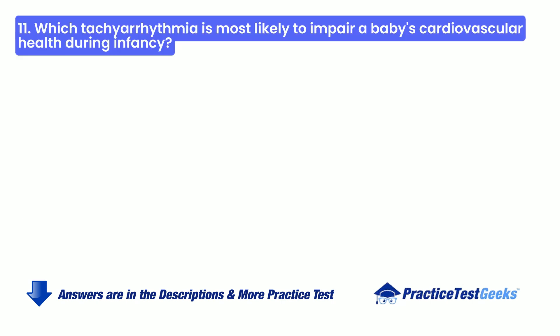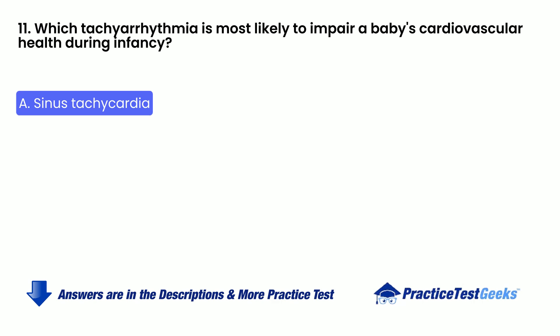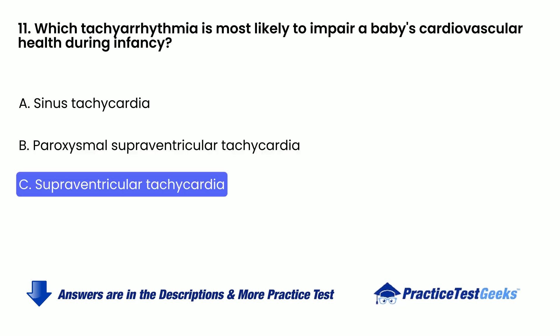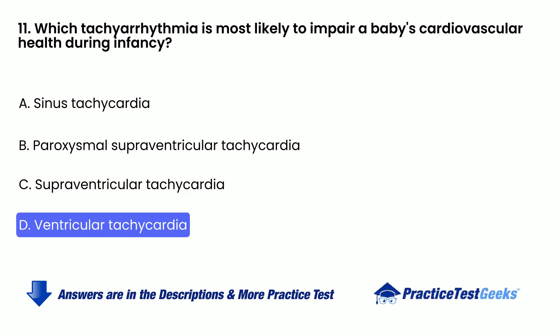Which tachyarrhythmia is most likely to impair a baby's cardiovascular health during infancy? A. Sinus tachycardia. B. Paroxysmal supraventricular tachycardia. C. Supraventricular tachycardia. D. Ventricular tachycardia.